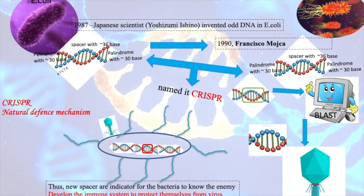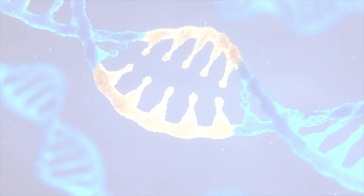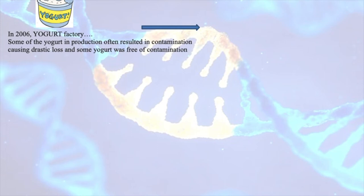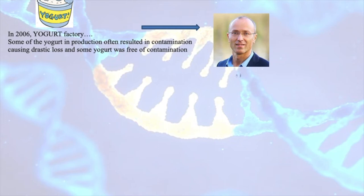This discovery continued, and in 2006 a big supporting event happened in a yogurt factory. Some of the yogurt produced was often contaminated, causing large losses for the company, while other batches were contamination-free. Scientists could not determine the cause. A scientist named Philip Horvath came forward and decided to sort out the issue through extensive research and experimentation.